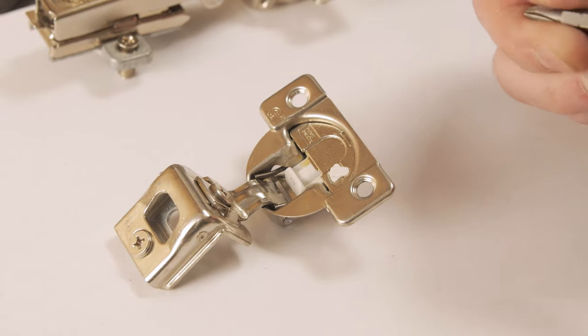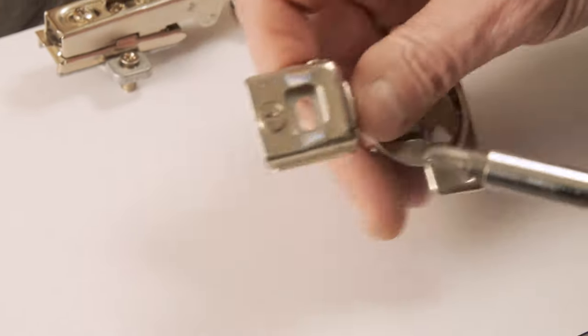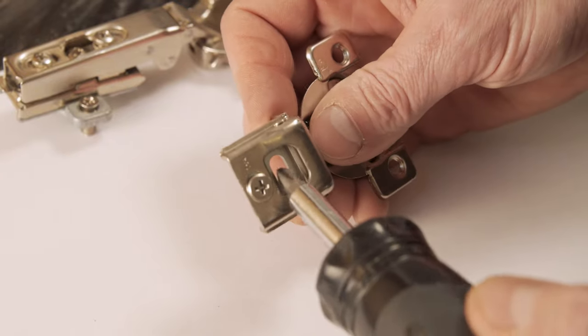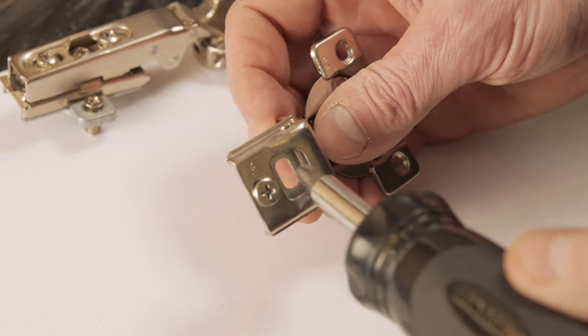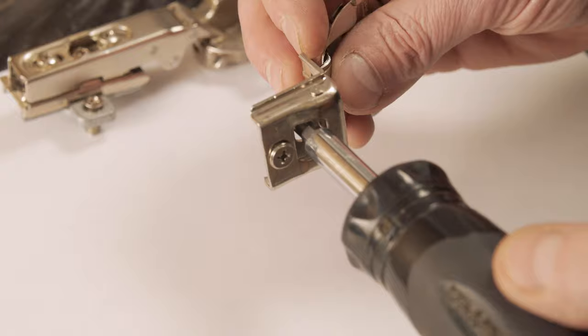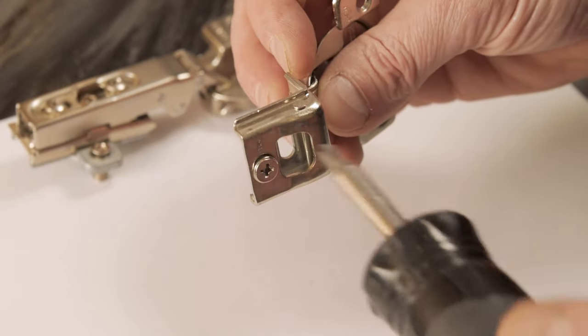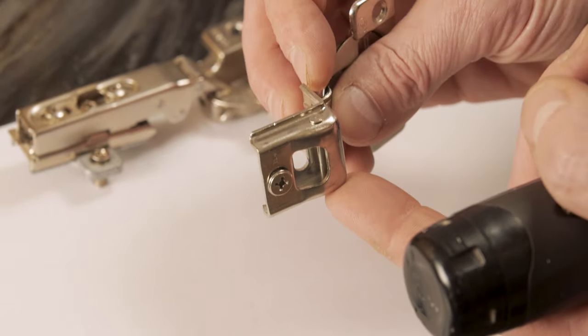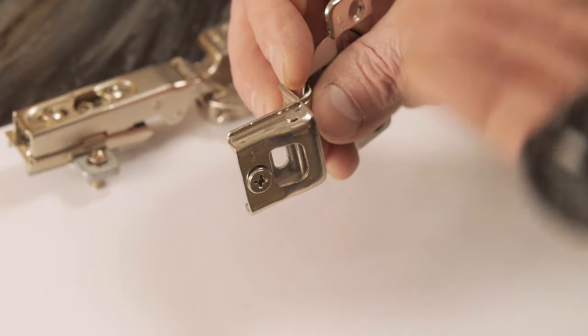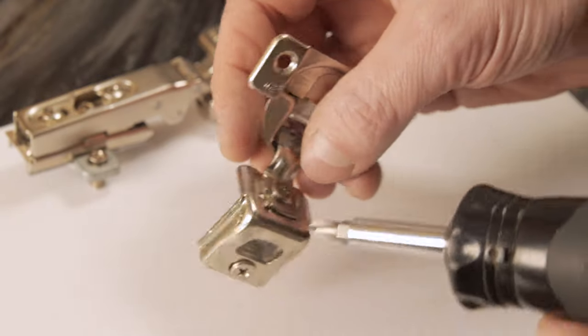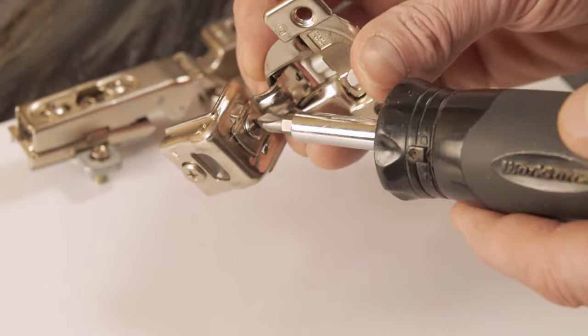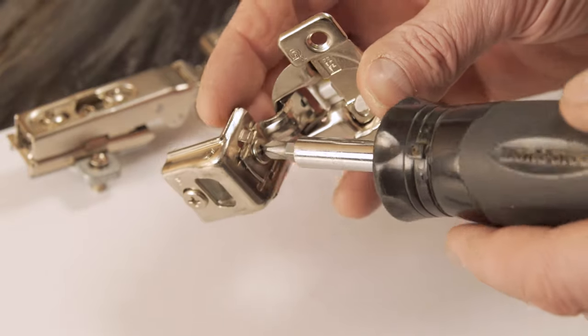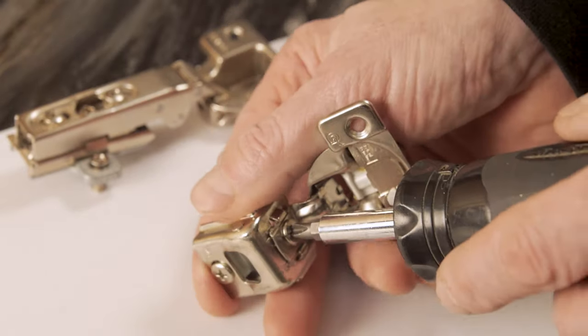I'm going to use the Phillips tip for this hinge. In this elongated slot, this is what would attach the hinge to the face frame. Before it's totally tightened down, it allows this hinge to move up and down on the face frame to move your door up or down. This hinge here on the face allows the door to move side to side.